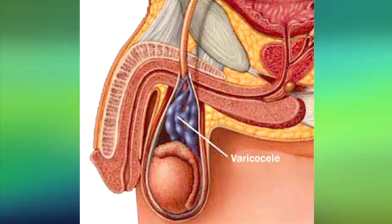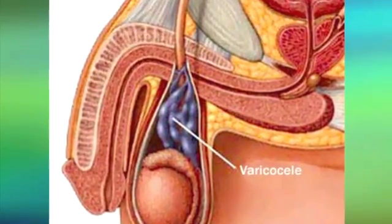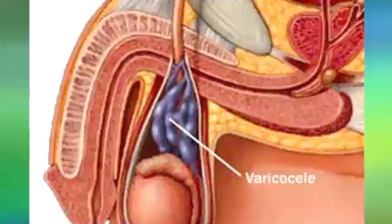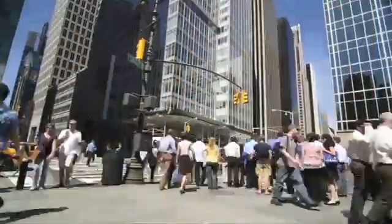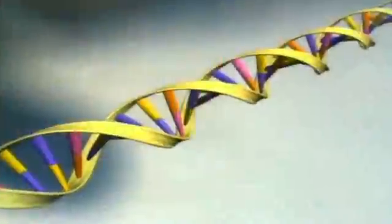A varicocele is a common, potentially correctable cause of male infertility. It is a collection of enlarged veins in the scrotum that can affect sperm production and its characteristics. Varicoceles occur in about 15% of all men and as many as 40% of those who are infertile. The tricky thing is there are a lot of fertile men who have a varicocele, so when you find a small one in an infertile male, a man might first want to consult with a urologist before acting on it, as treatment sometimes requires surgery.